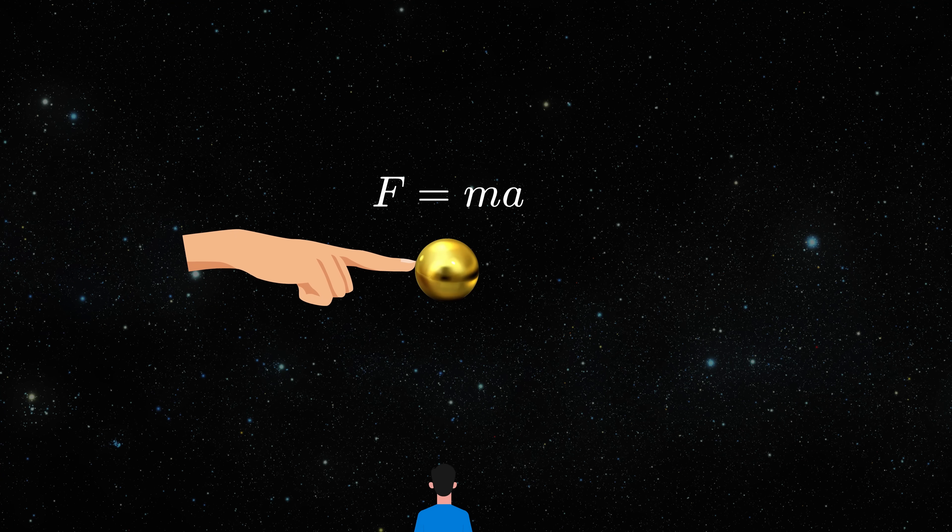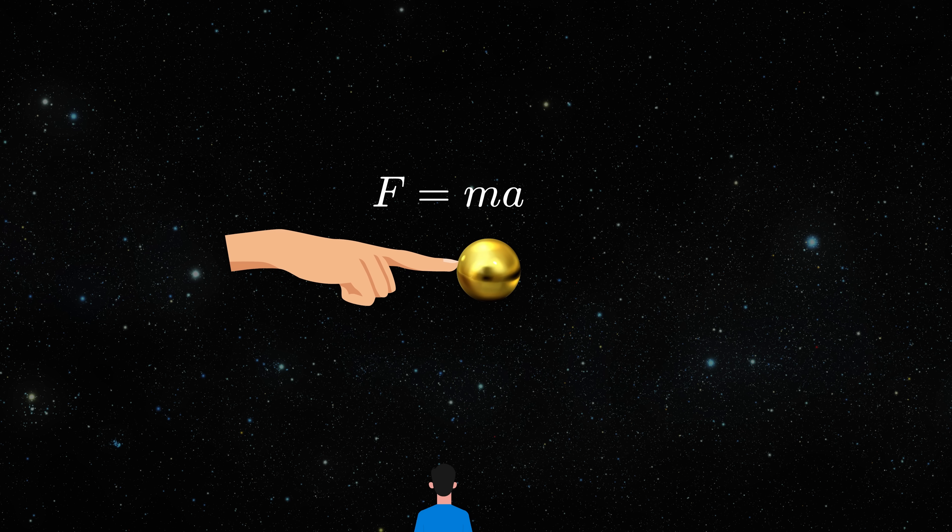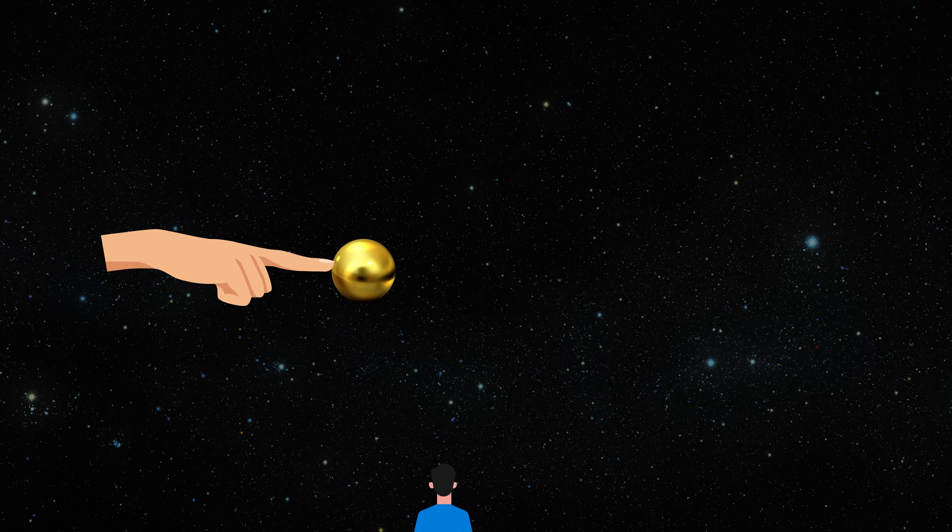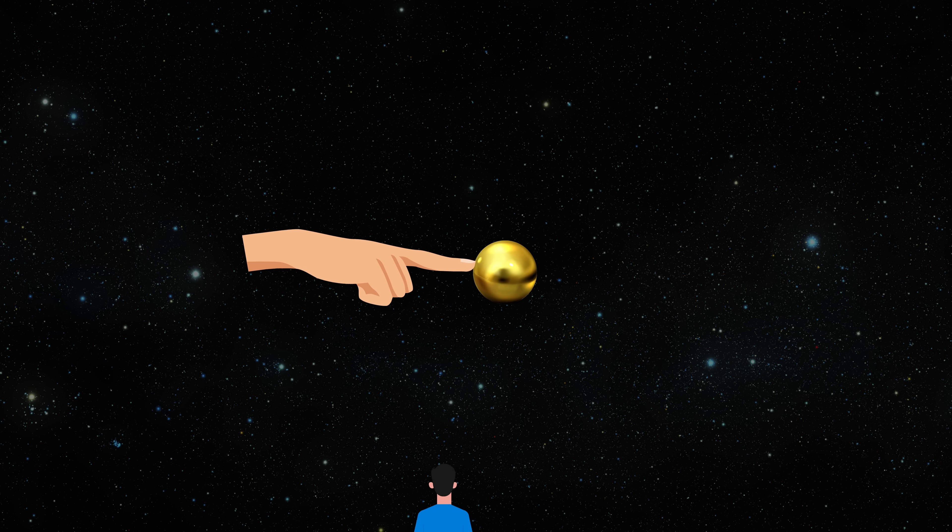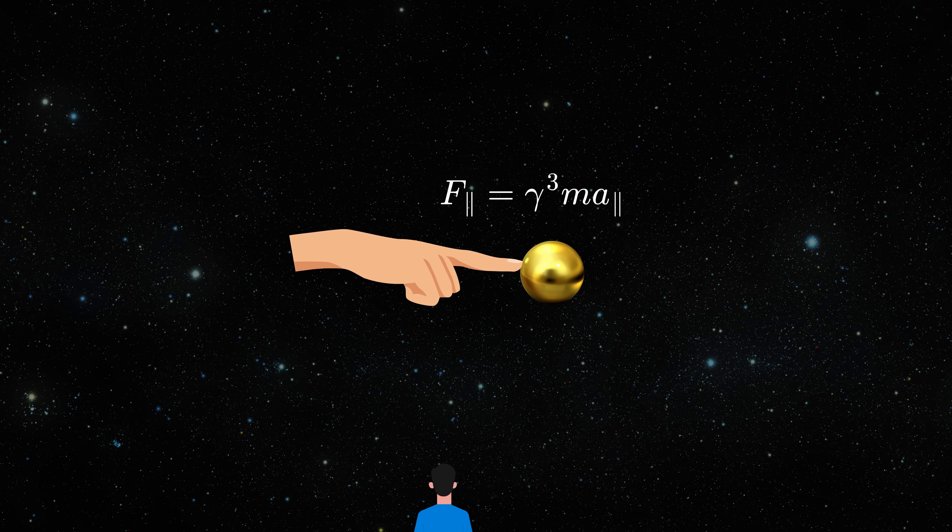This is the mentioned resistance to force. But it doesn't work the way you would think. For static observer, Newton's law looked something like this, where m is stationary mass. If you have an object moving with a large speed in this direction and you are pushing it in the same direction, the law looks like this. There is a third power in gamma.